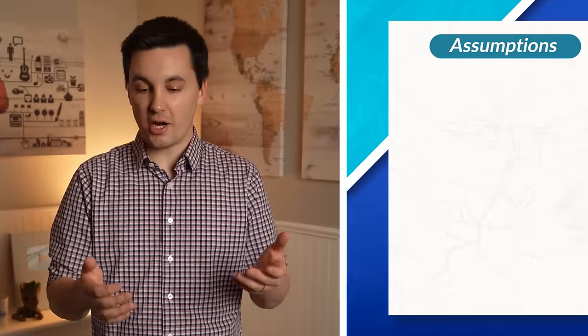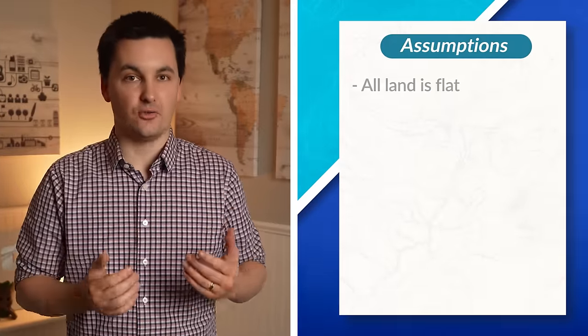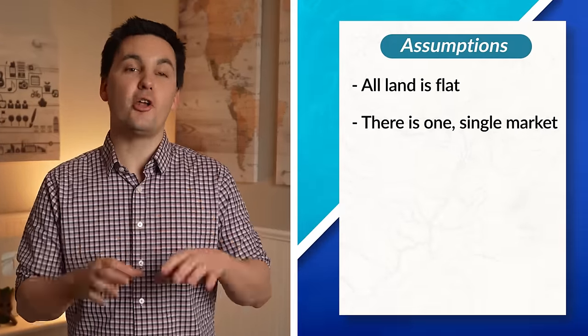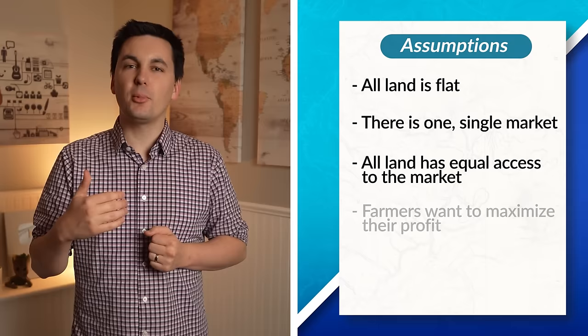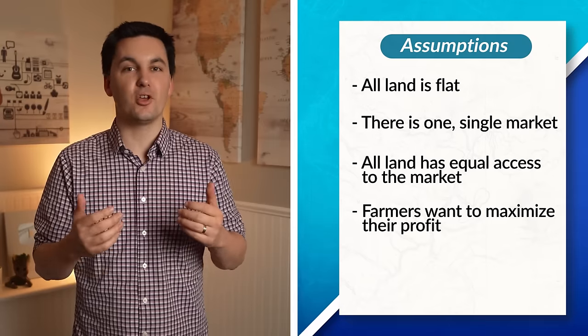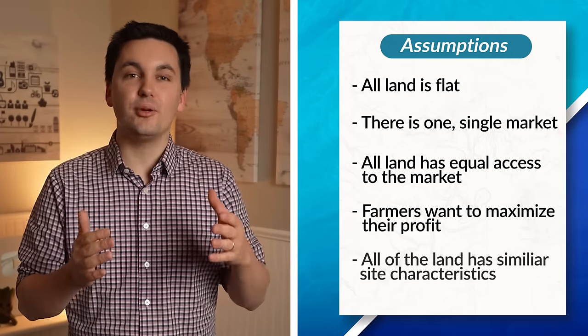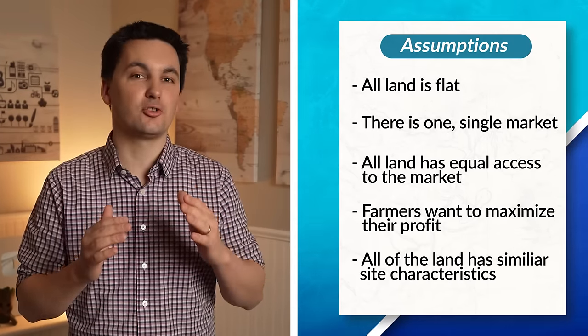Von Thunen first proposed this model in 1826. When creating the model, von Thunen used a couple of different assumptions. This was to allow the model to be used in a variety of different situations. The model assumes that all land is flat, that there is one single market, that all land has equal access to the market, that farmers want to maximize their profit, and that all of the land has similar site characteristics.